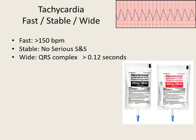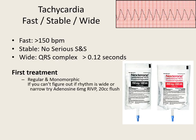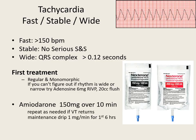We are fast — over 150 beats — stable with no serious signs and symptoms, and wide: greater than 0.12 seconds or greater than three little boxes. If you cannot determine if that rhythm is narrow or wide, you can try adenosine — 6 mg rapid IV push followed by 20 cc flush. Our first choice is amiodarone, dripping 150 mg over 10 minutes. We can repeat this if needed for another 150 mg over 10 minutes, up to three times.